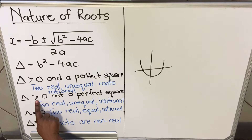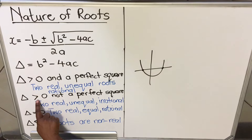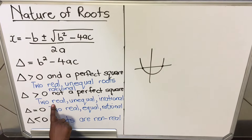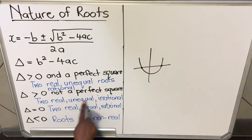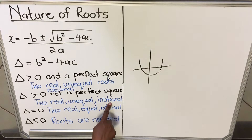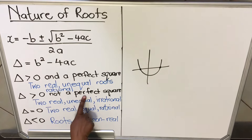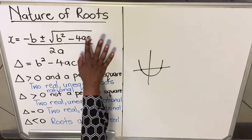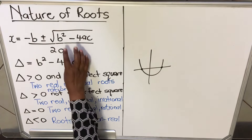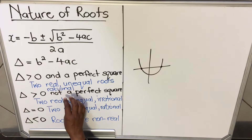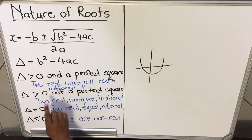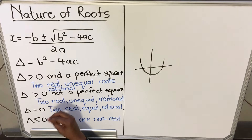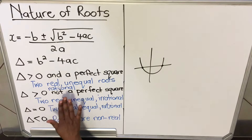When delta is positive but not a perfect square, you will still have two real roots and they will still be unequal, but they will be irrational. Because b² − 4ac was under a square root and is not a perfect square, you get an irrational number. This helps us determine the nature of the roots without calculating the full quadratic formula.